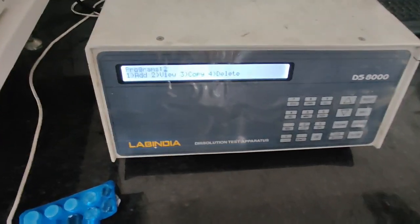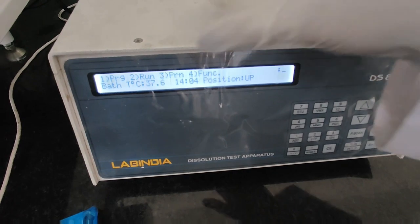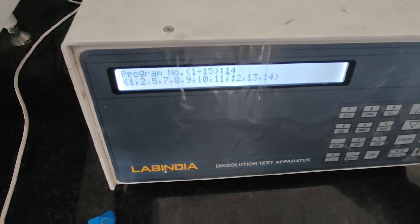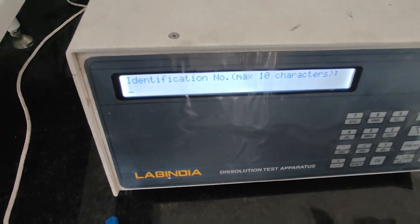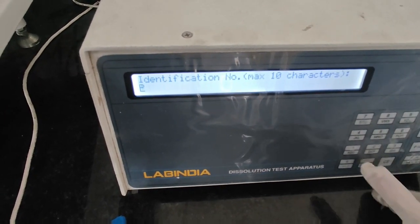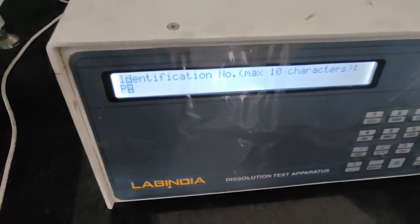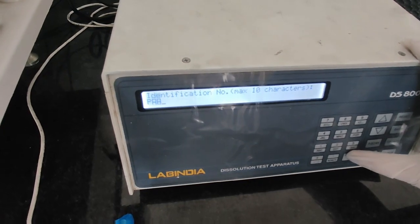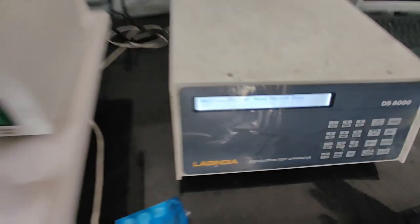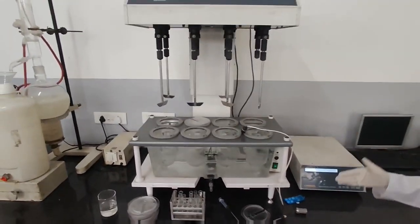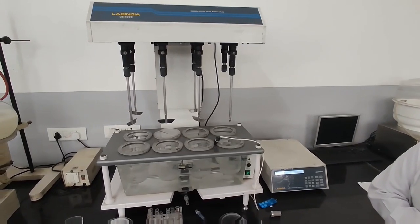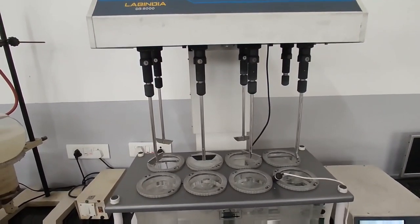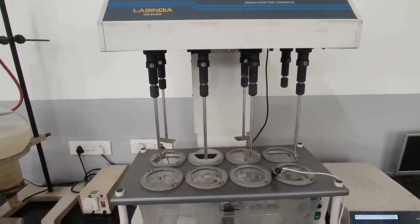Now we are to run the program. For that we will press escape. Select 2. As you can see it is showing run. Then press enter. It is asking the identification number. I have entered PA. Then again press enter. Now as you can see, paddles are going downward till they are reaching to their particular position.